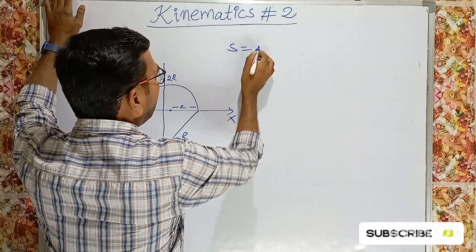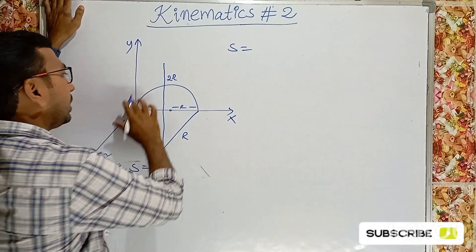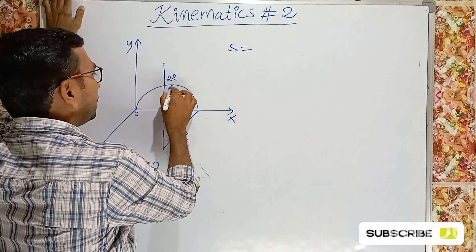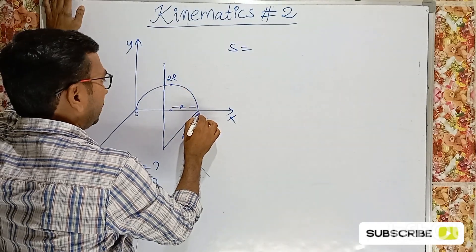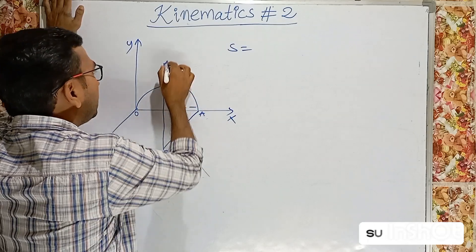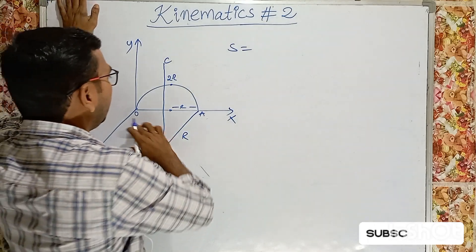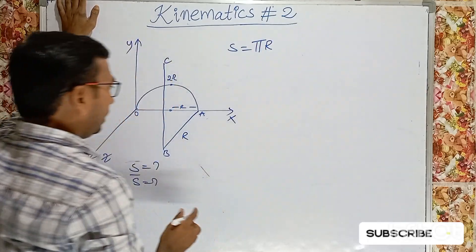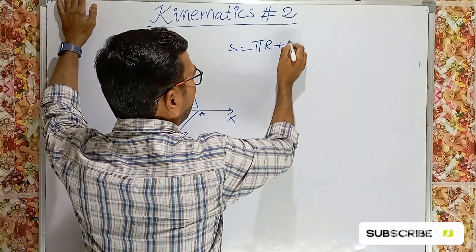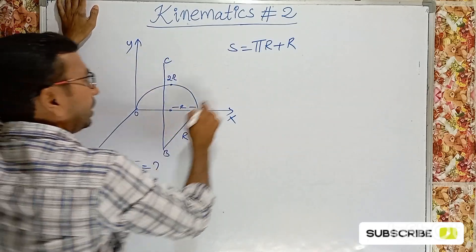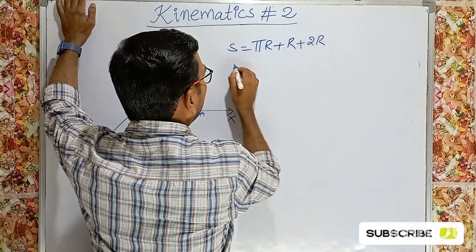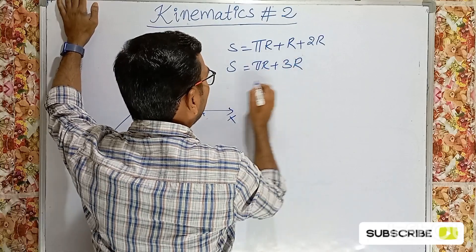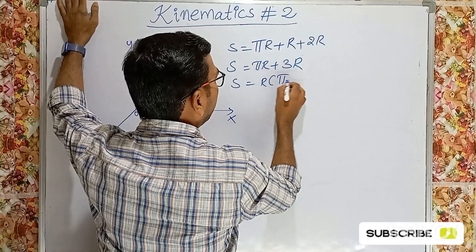Distance s is equal to the total length of the path. The semicircular path: a full circle is 2πr, so a semicircle is πr. From O to A (semicircular path), distance is πr. From A to B, distance is r. From B to C, distance is 2r. So total distance s = πr + r + 2r = πr + 3r, which equals r(π + 3).